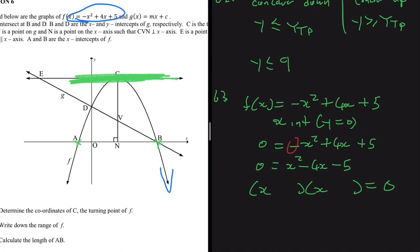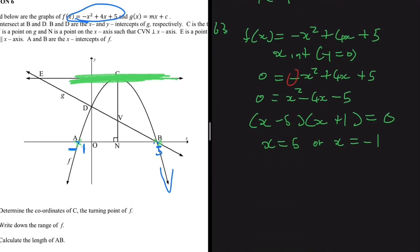We need two numbers that multiply to -5 and add to -4: those are -5 and +1. So we get x = 5 or x = -1. The x-coordinate of A is -1 and the x-coordinate of B is 5. The length from A to B is 5 - (-1) = 6 units. Therefore AB = 6 units.